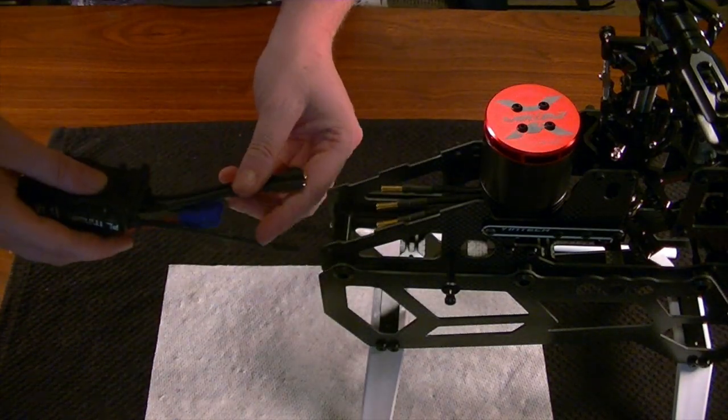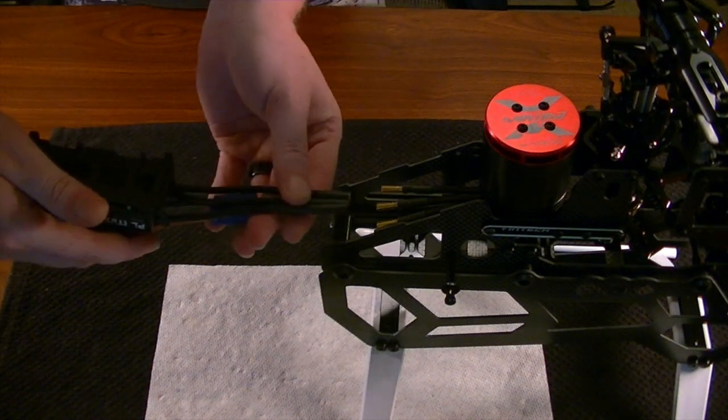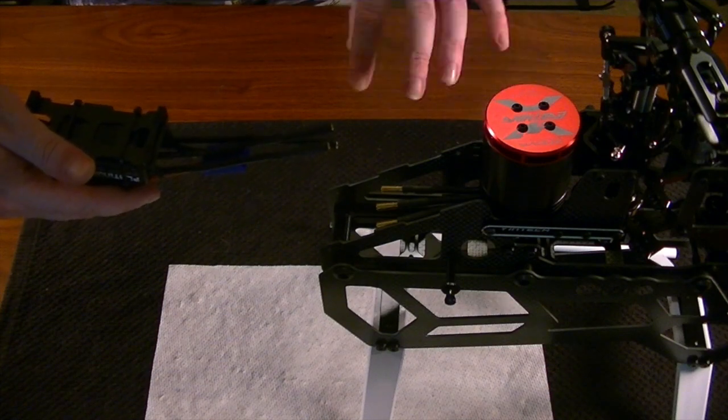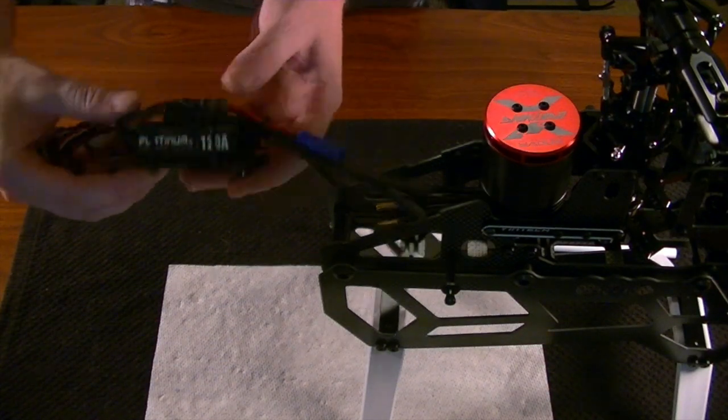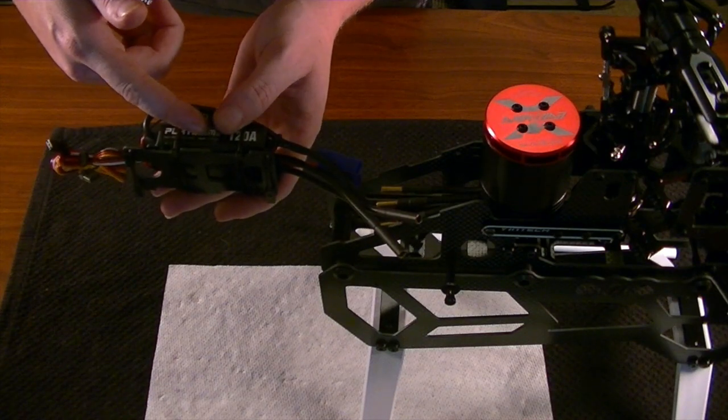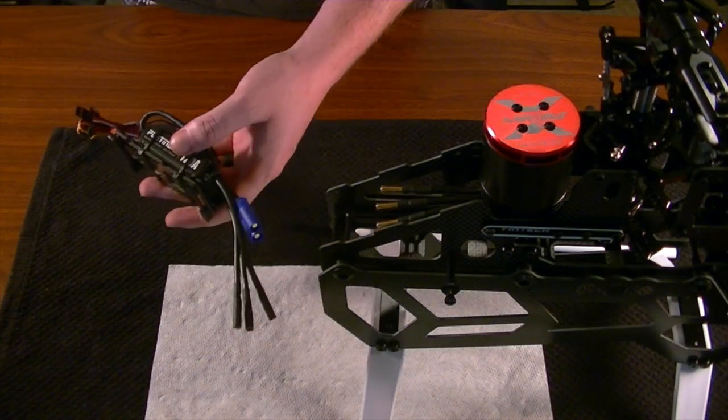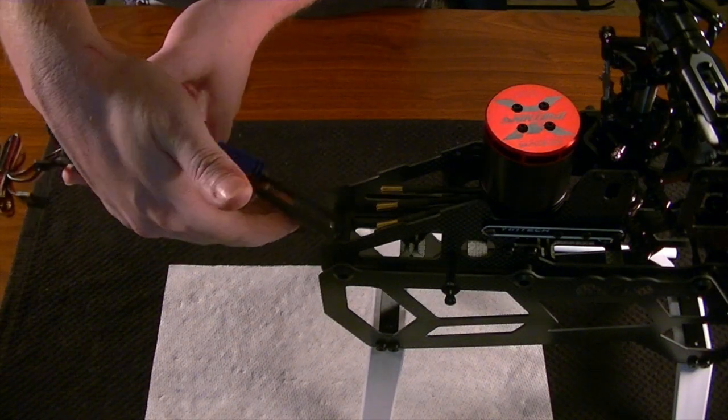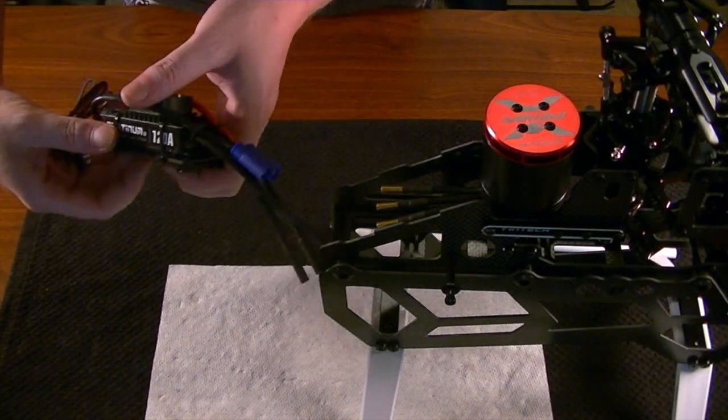Now some people may ask, what about reversing the polarization or whatever? Let's say our motor's not turning in the right direction. Well, again, I'm using a Hobbywing ESC, so all I gotta do is plug in the program box and I can make this motor spin clockwise or counterclockwise. I don't have to reverse two of my three cables on here to change polarity.